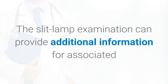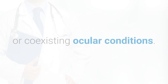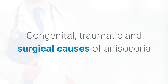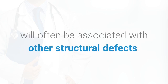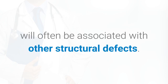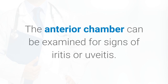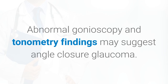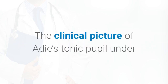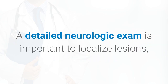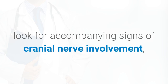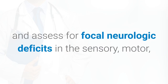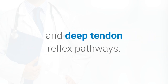The slit lamp examination can provide additional information for associated or coexisting ocular conditions. Congenital, traumatic, and surgical causes of anisocoria will often be associated with other structural defects. The anterior chamber can be examined for signs of iritis or uveitis. Abnormal gonioscopy and tonometry findings may suggest angle-closure glaucoma. The clinical picture of Adie's tonic pupil under slit lamp examination shows iris sector palsy and vermiform iris movement. A detailed neurologic exam is important to localize lesions, look for accompanying signs of cranial nerve involvement, and assess for focal neurologic deficits in the sensory, motor, and deep tendon reflex pathways.